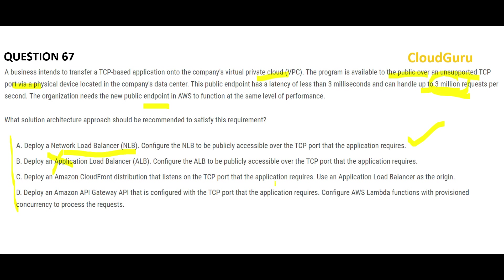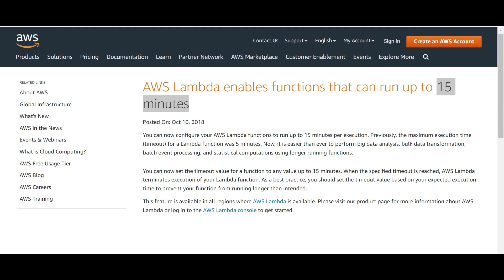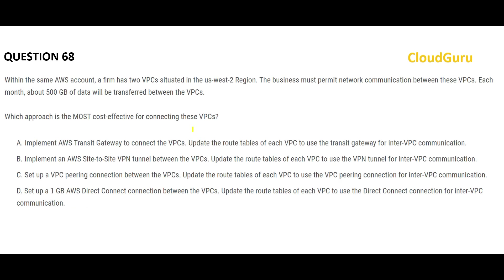Option B is wrong because it uses ALB, and option C is also wrong for the same reason. The fault with option D is it tells you to configure Lambda functions with provisioned concurrency to process the requests. Lambda times out in 15 minutes — remember that. When trying to process 3 million requests per second, it will time out, and Lambda won't have the capability to scale to that level. We need a load balancing solution, not a Lambda function. NLB is the load balancing solution, so that is the final answer.